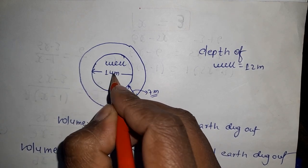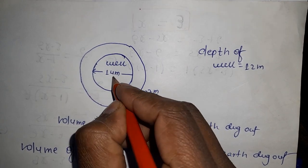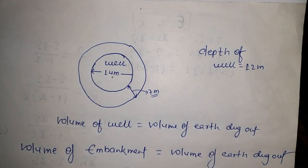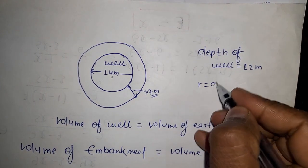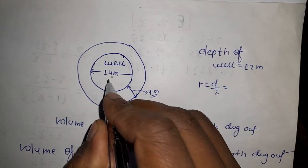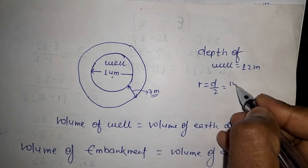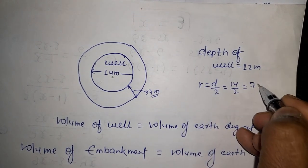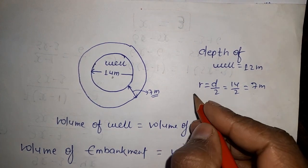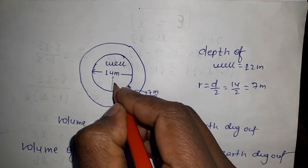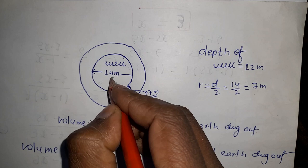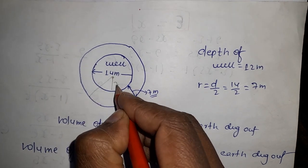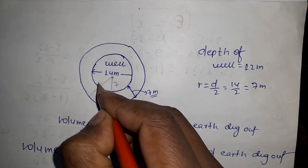So its radius will be - we know diameter equals 2 times radius, so radius is half of diameter. Given 14 meters, so half of 14 is 7 meters. That means here you have 7 meters.